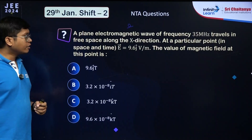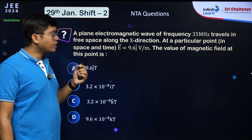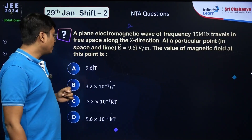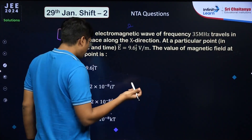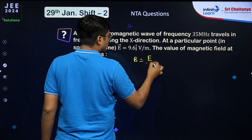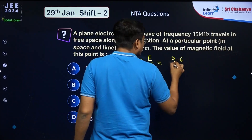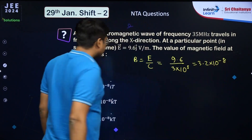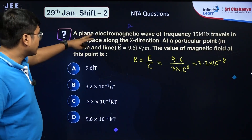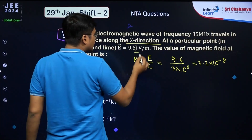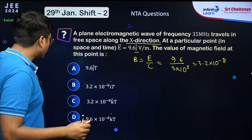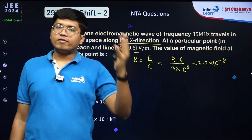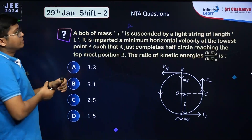A plane EM wave of frequency 35 MHz travels along the x-direction. At a point, E = 9.6 V/m. The magnetic field magnitude B = E/c = 9.6/(3×10⁸) = 3.2×10⁻⁸ T. Since the wave travels in x and E is in the j-direction, B must be in the k-direction (z-axis).